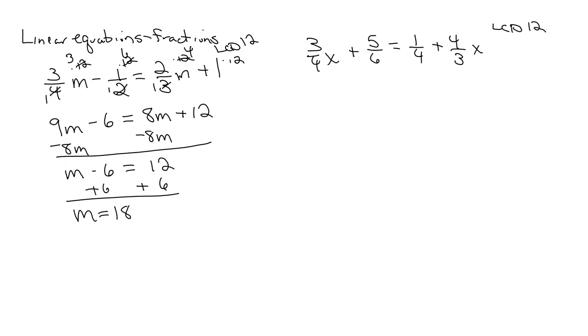I'm going to multiply each term by it and reduce. 4 goes into 12 three times, so this becomes 9x plus. 6 goes into 12 twice, 10. 4 goes into 12 three times, plus 3 goes into 12 four times, 16x.